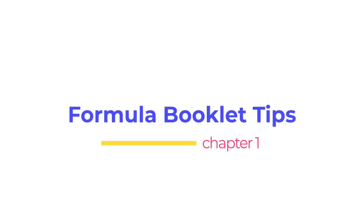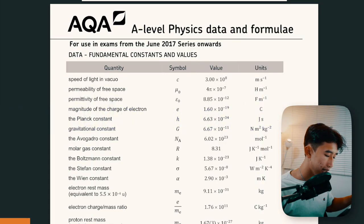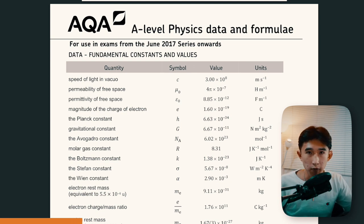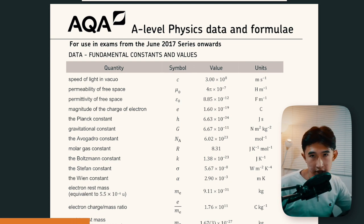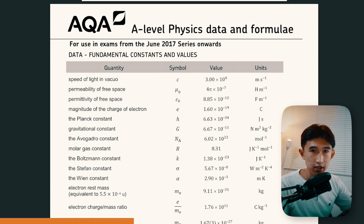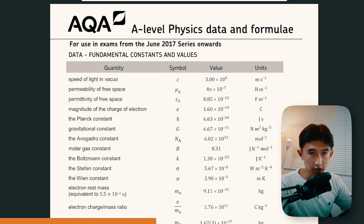As you can see, it's officially called the AQA A-level physics data and formula booklet, for use in exams from 2017 onwards. The number one tip I have when revising physics and doing past paper questions, topic questions, or even textbook questions — the textbooks I recommend are the official Oxford physics textbook as well as the CGP physics textbook.